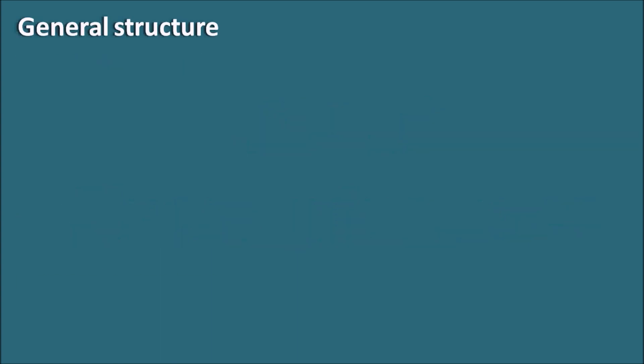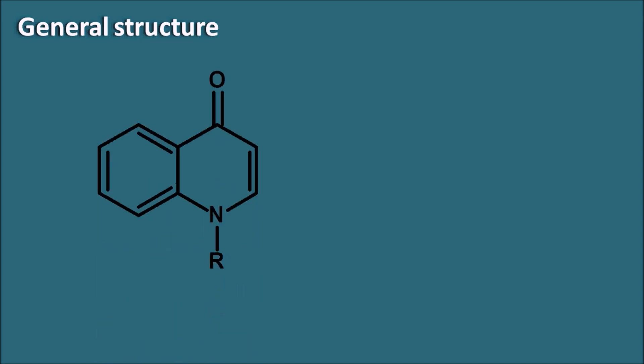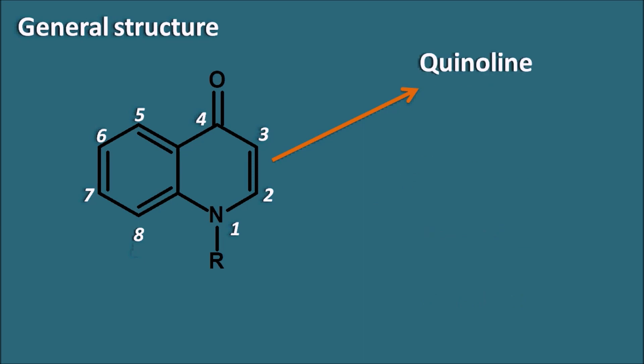Today let us see the SAR of fluoroquinolones. What is the general structure of fluoroquinolones? Even though they are called fluoroquinolones, they have a basic nucleus — the quinoline ring system — with numbering starting from the nitrogen: 1, 2, 3, 4, 5, 6, 7, and 8. This quinoline ring system has a fluorine group at the 6th position, which is why they are commonly called fluoroquinolones.